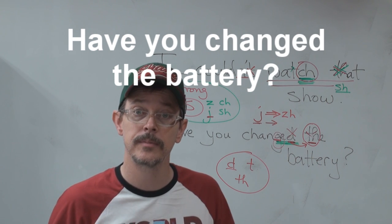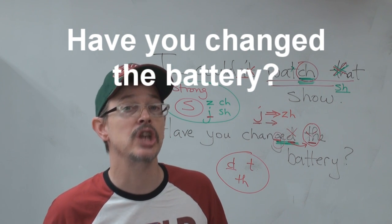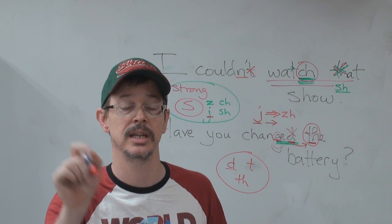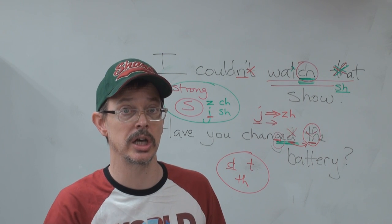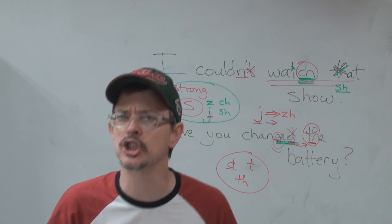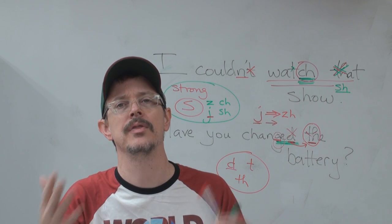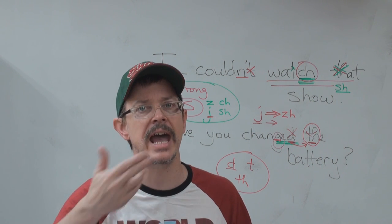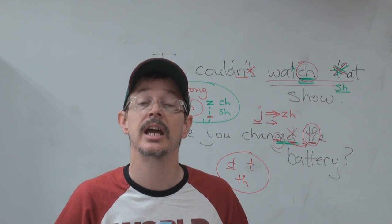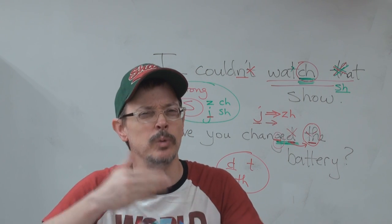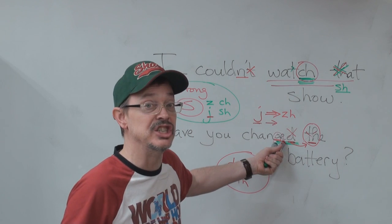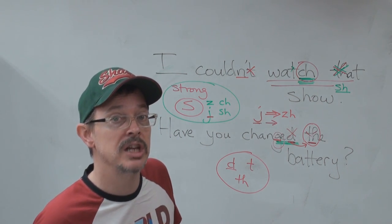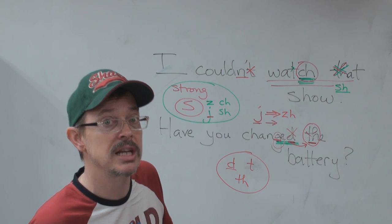Have you changed the battery? First step: D and TH — have you changed the battery? When you say it slow, keep all of the sounds. When we say it fast, the D and TH blend. And when we say it really fast, the J becomes a ZH. Have you changed the battery?